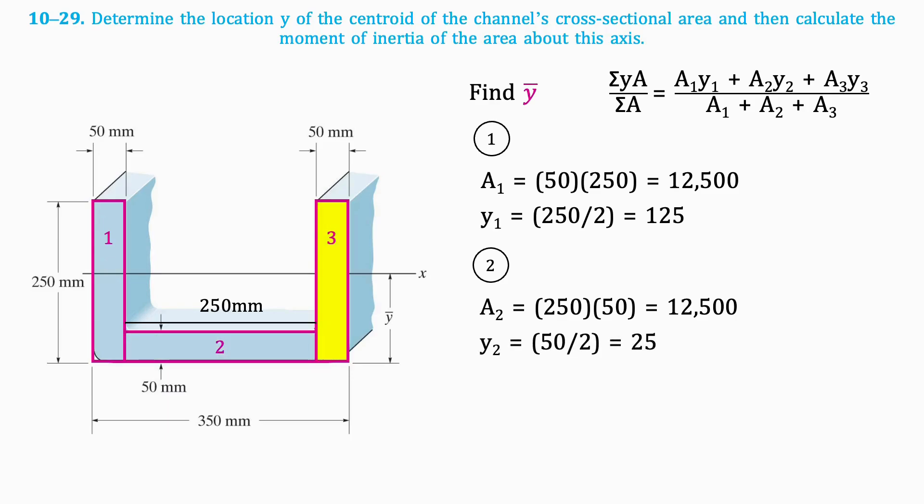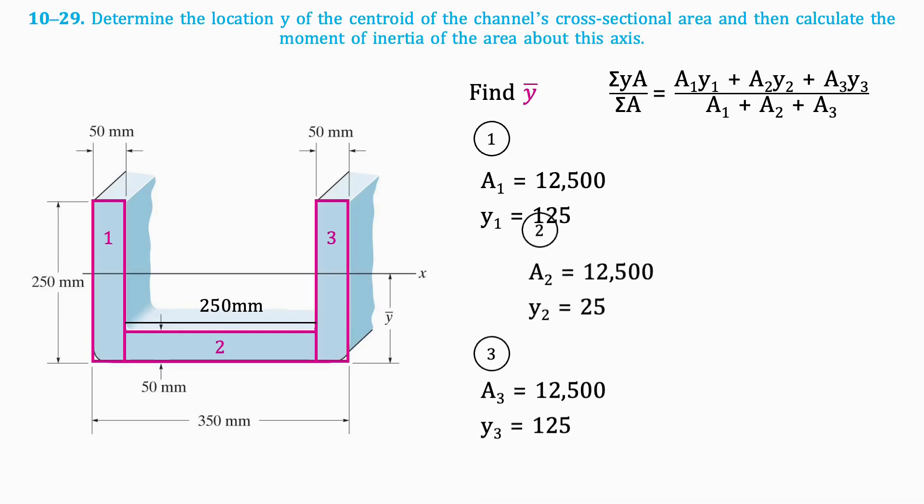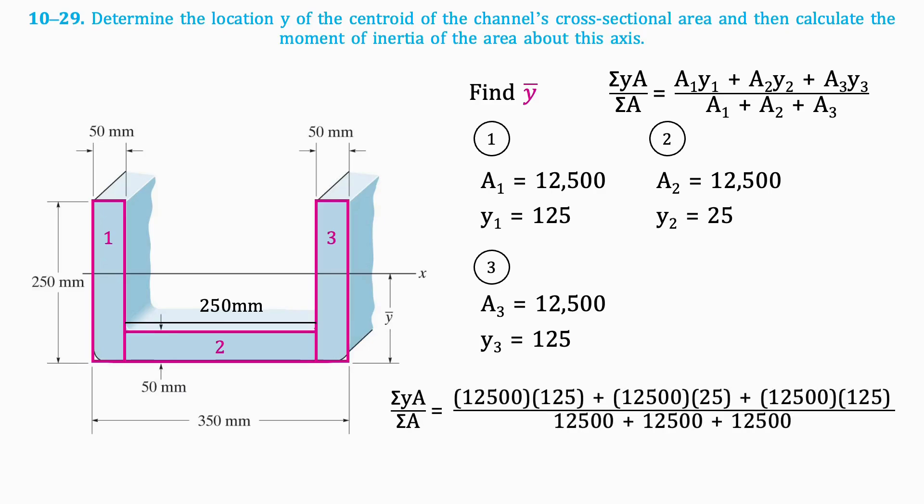The area of the third section is the same, and the centroid location is the same as section 1. Now, we have everything we need to find the location of the centroid of the whole shape. Using the formula we introduced earlier, this results in 91.7 mm.